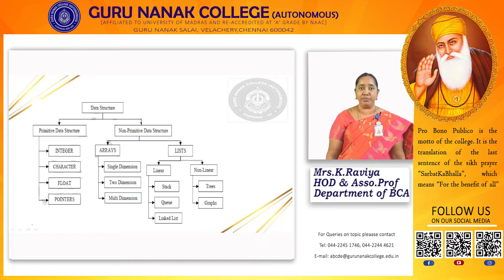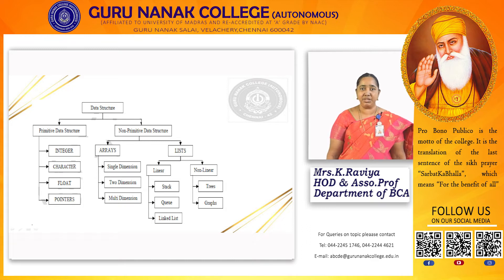Usually in all programming languages, we use these data types such as integer, character, float, and pointers. The next one is non-primitive data types. For non-primitive data types, array and list are the two subdivisions. For an array, it may be single-dimension, two-dimension, or multi-dimensional. For the list, there are two types: linear and non-linear. For linear, we have stack, queue, and linked list. For non-linear, we have tree and graph.